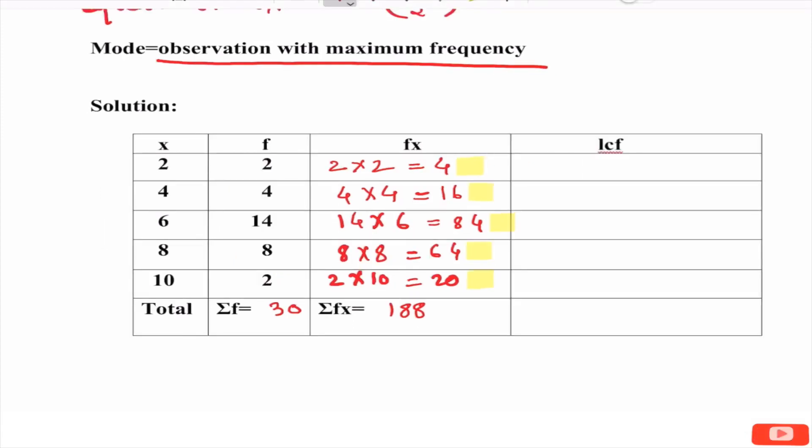Next column we are making for LCF, that is less than cumulative frequencies. How to find them? Go on adding the frequencies downwards. First value of the LCF is first frequency 2 that we write as it is.